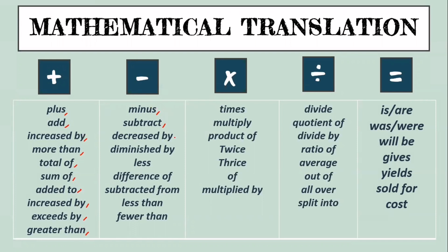For multiplication, we can use the word times, multiply, product of, twice, or 'of' alone can work. 'Of' like 50 percent of 100. When we get the percentage, what is the operation that we use? Multiplication. And then multiplied by. For division, we can use the word divide, quotient of, divided by, ratio of, average, out of, all over, split into.